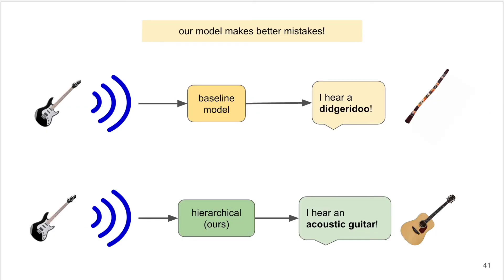We also found that our model makes better mistakes on average. That is, when making incorrect predictions, our model is more likely to predict instruments that are hierarchically closer to the ground truth and thus have similar sound production mechanisms.